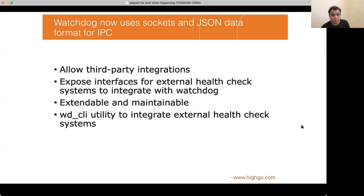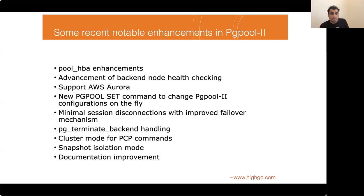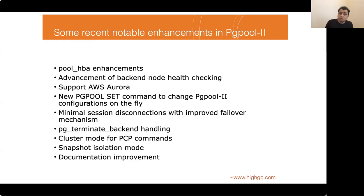This slide lists more notable enhancements added to recent versions. One I particularly want to mention is the new snapshot isolation mode — a really interesting addition that can be used to build a multi-primary PostgreSQL server with atomic visibility. There aren't many solutions out there for PostgreSQL that provide atomic visibility with a multi-primary setup. If you're interested in a scale-out solution for PostgreSQL that also provides atomic visibility, do explore this feature.